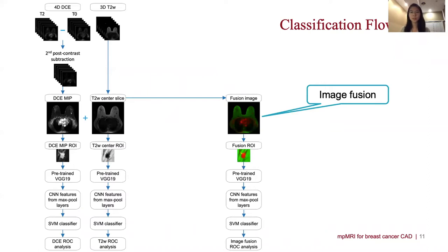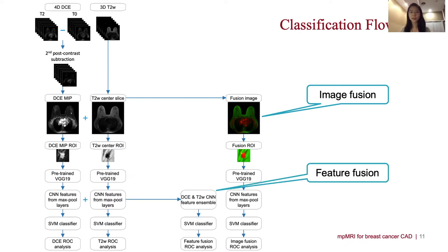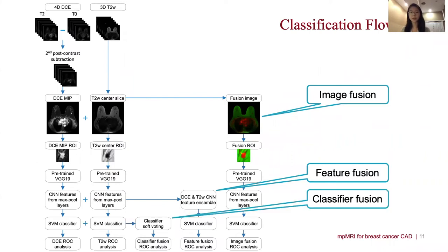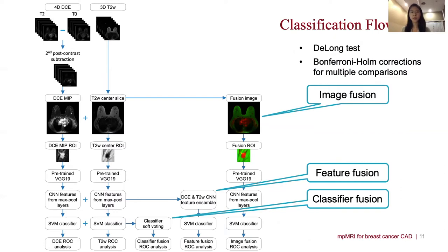Our first multi-parametric method was image fusion, where the DCE image was input into the red channel and a T2-weighted image was input into the green channel to form an RGB fusion image, which naturally fit into our model because it was pre-trained on color images. Our second method was feature fusion, where we used the ensemble of features extracted from the two MRI sequences to train a classifier. Our third method was classifier fusion, where we aggregated the prediction scores from the two classifiers by soft voting. We compared all classification schemes using the DeLong test and accounted for multiple comparisons using the Bonferroni-Holm method.